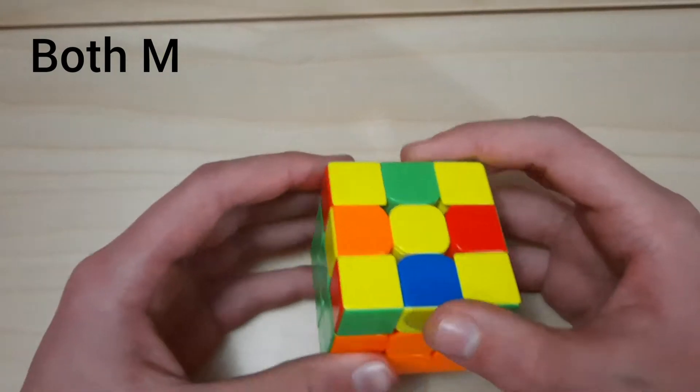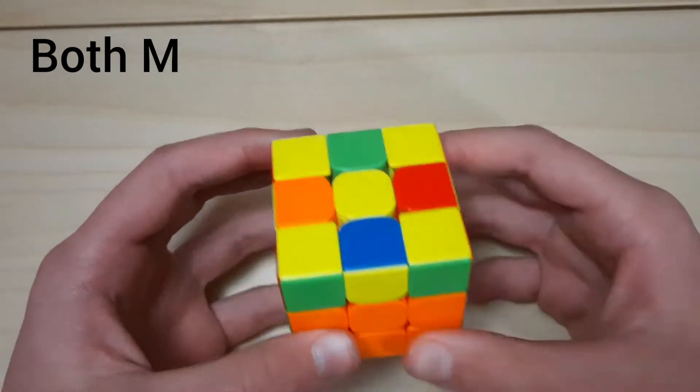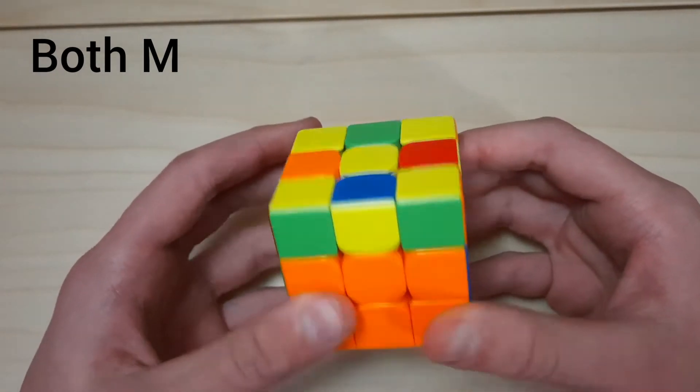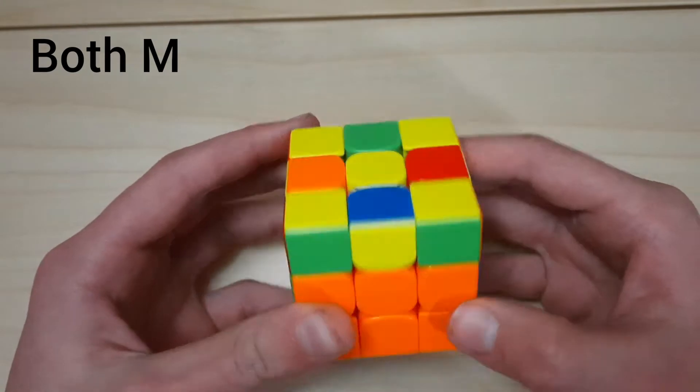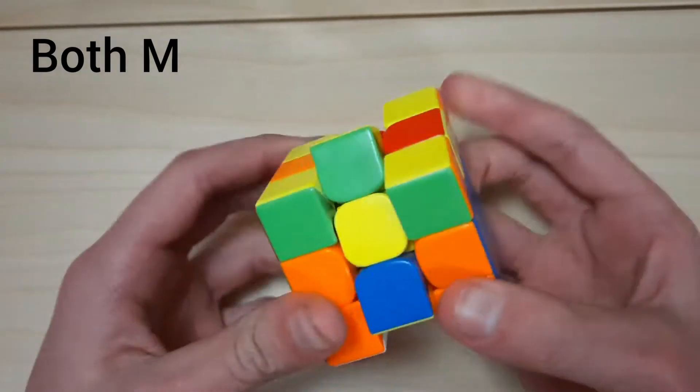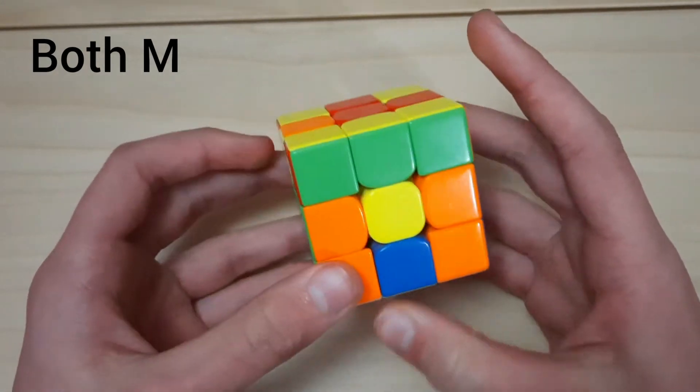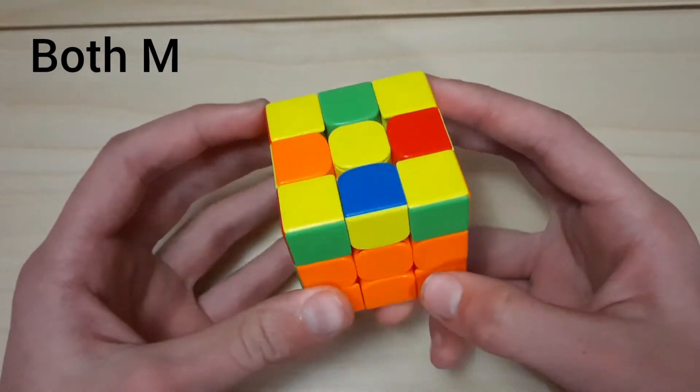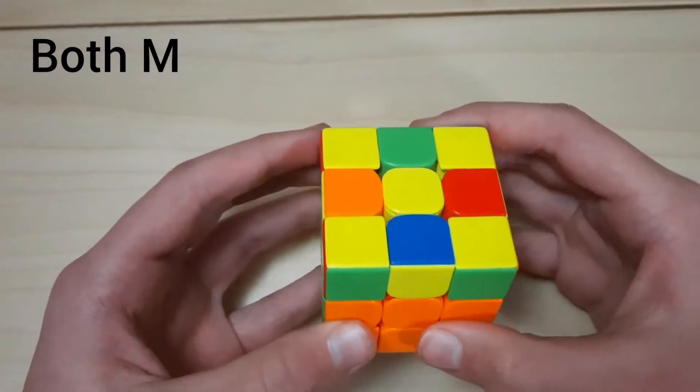This is really easy. In fact, it's almost as good as an arrow. This is a one-move ELR. You just do an M' or an M, and you have misoriented centers, and all your edges are oriented, as long as those two opposite ones are in the M slice.